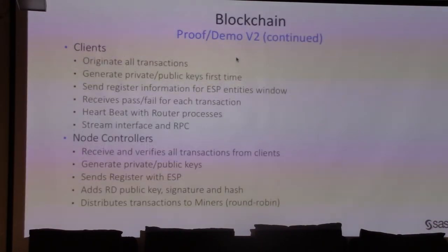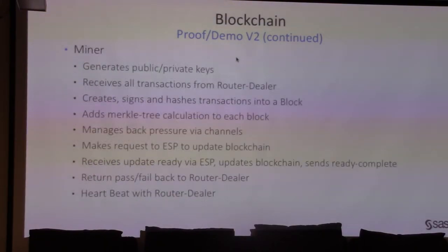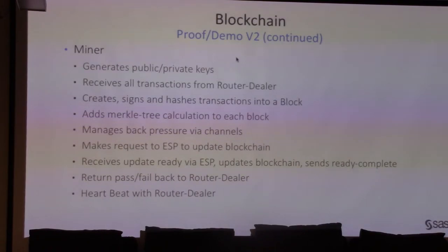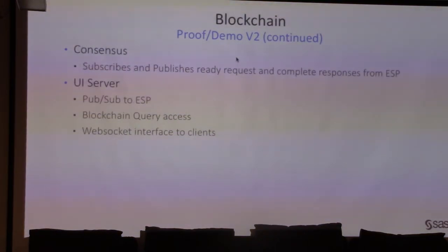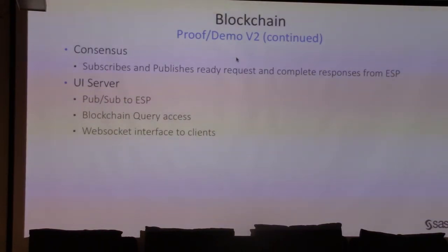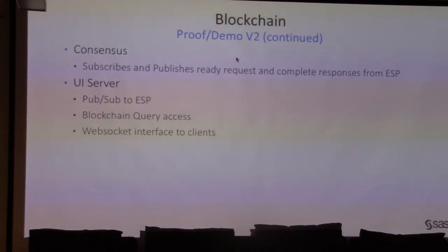All processes are validating signatures. Clients originate all transactions, with the exception of registration during a heartbeat process. The miner receives updates via the ESP engine — the ESP tells it when it's its turn to update the blockchain, and it sends ready-complete back, then hands the token to the next miner. My UI server doesn't touch the blockchain at all — it reads data out of ESP. So once you get the events into event stream processing, that's where all your analytics is. You don't have to worry about affecting or touching any of the blockchain data directly.